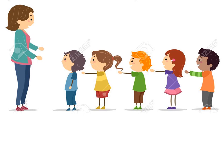The blue t-shirt boy is standing near the teacher. In which position is he standing? He is standing in the first position. Next to the boy, who is standing? The girl with the yellow shirt is standing after the first boy. She is standing in the second position.